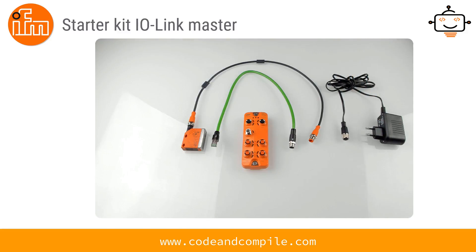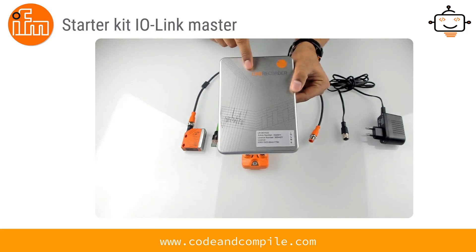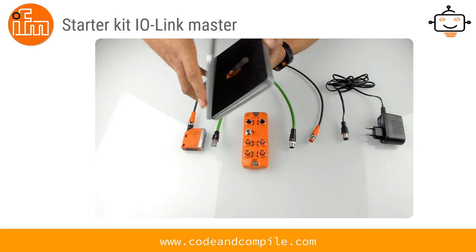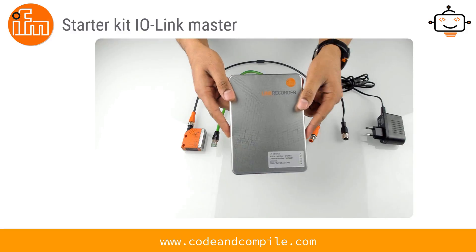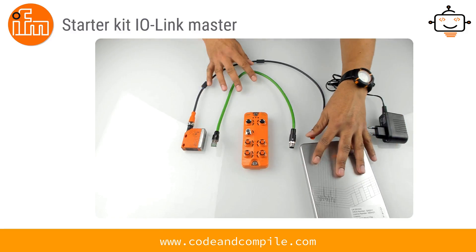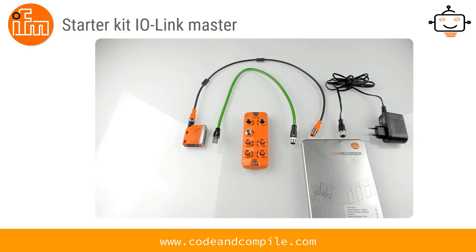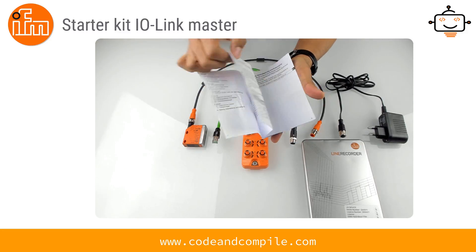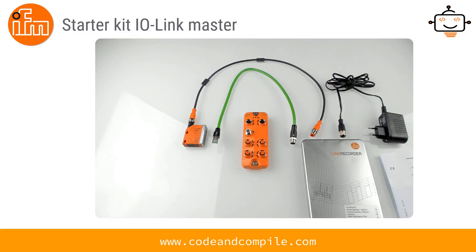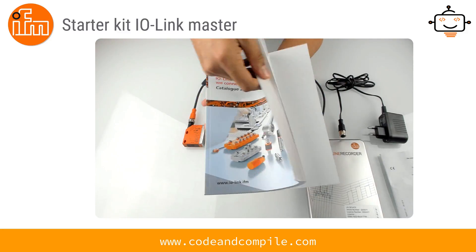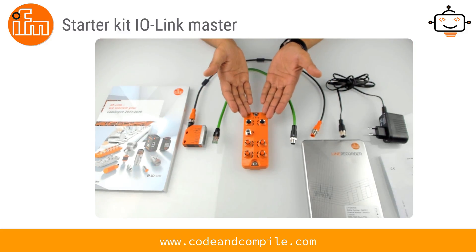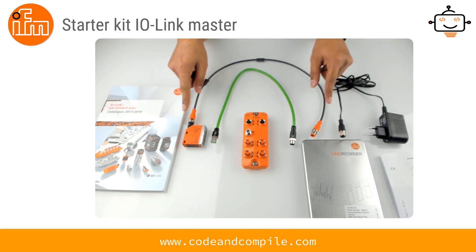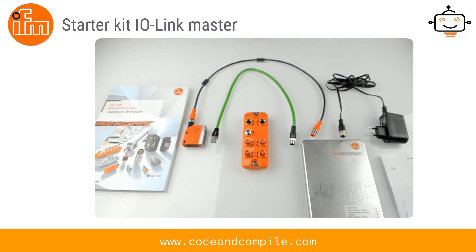Along with the power adapter, you have software used to send parameters to the sensor, called Line Recorder. The starter kit includes this software on a pen drive, which also contains a license to use it. Additionally, you get catalogs and manuals with information about the various other sensors and actuators available from IFM, so you can check which sensor suits your requirement and verify compatibility before ordering. This is the complete kit — the Starter Kit IO-Link Master.